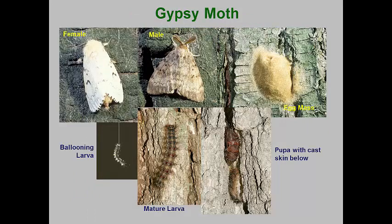The gypsy moth is used here as an example of a major invasive defoliating caterpillar. The gypsy moth was actually brought to the United States by an entomologist in the 1800s in an attempt to breed a cool-season silkworm. After failed attempts to cross the insect with other silk producers, the moth was released and escaped into the environment.